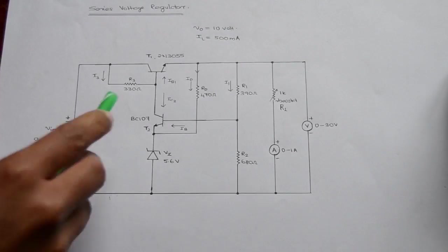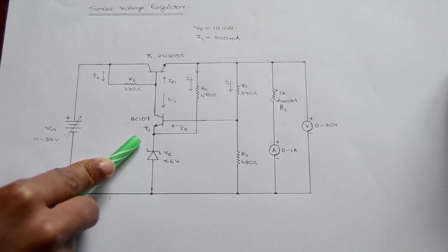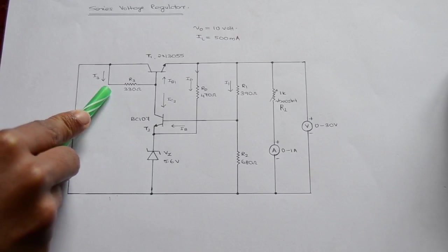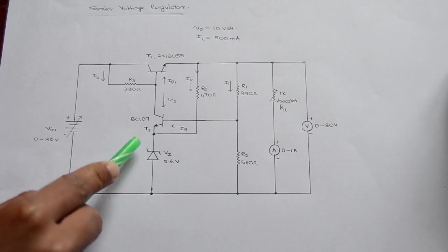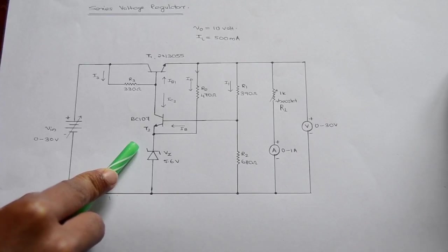This circuit consists of two transistors, T1 and T2. T1 is a power transistor and it acts as an emitter follower. T2 is a low-power transistor and it acts as a DC amplifier.